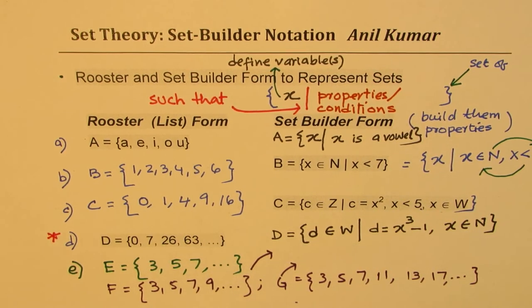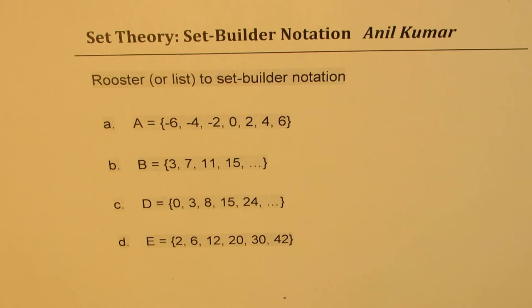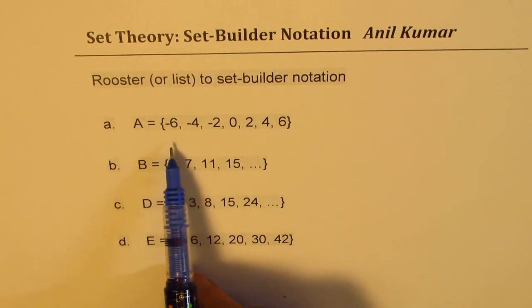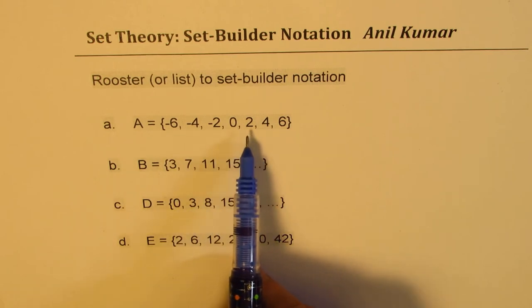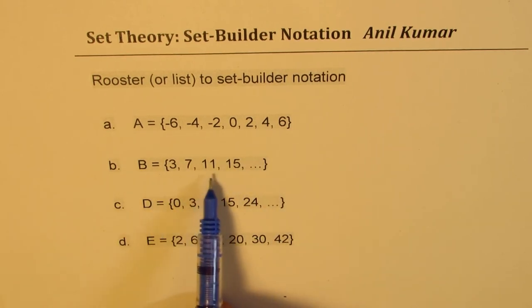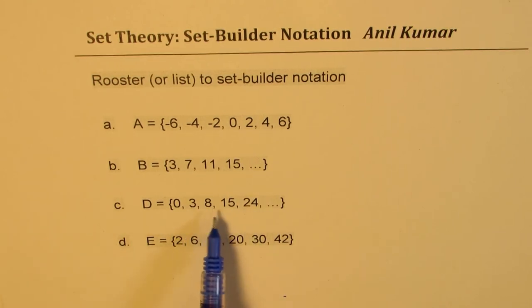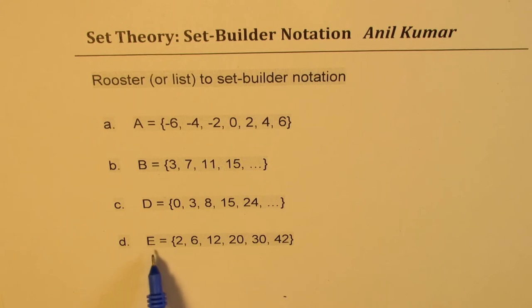Here are a few more examples where I'd like you to write the set in set builder form for the given elements — this will give you good practice. We have an important test question: given roster form, write in set builder notation. The four sets are: A = {−6, −4, −2, 0, 2, 4, 6}, B = {3, 7, 11, 15, ...}, D = {0, 3, 8, 15, 24, ...}, and E = {2, 6, 12, 20, 30, 42}.